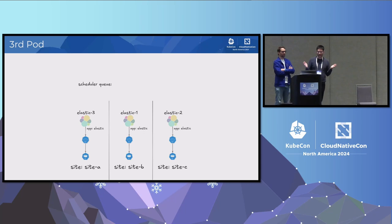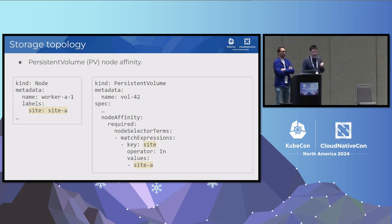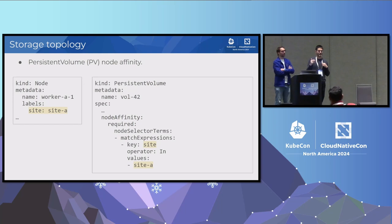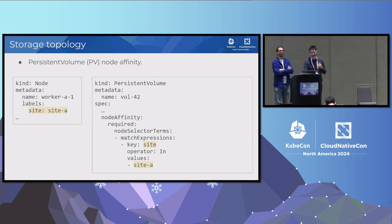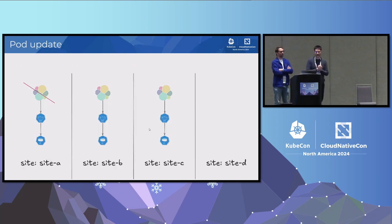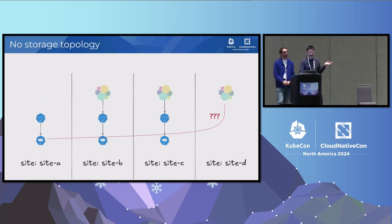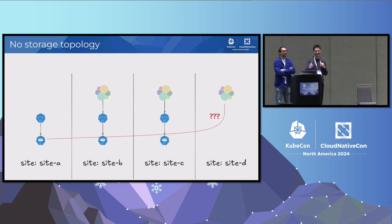This is how you spread pods among domains, sites, or availability zones. After dynamic provisioning, the storage is typically local to the site or availability zone. The CSI driver, together with Kubernetes, puts a node affinity into the persistent volume specifying which nodes can access that volume. Without topology knowledge, the scheduler could put a replacement pod into a site where the volume doesn't exist and would not be mountable.